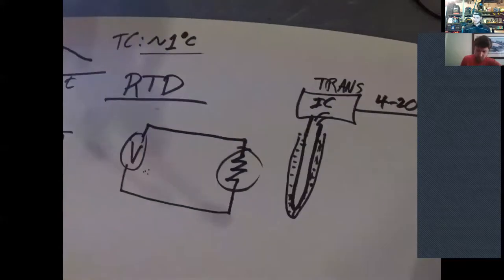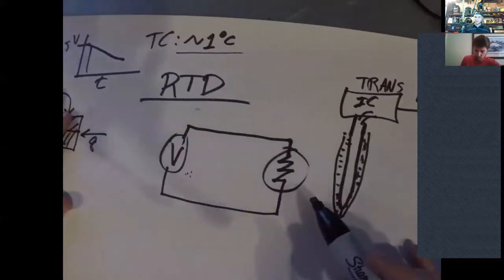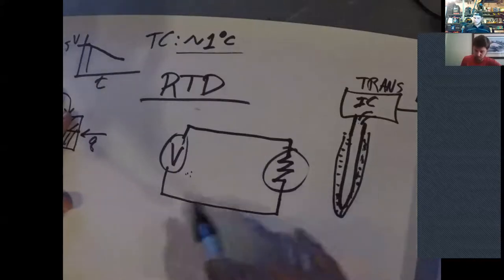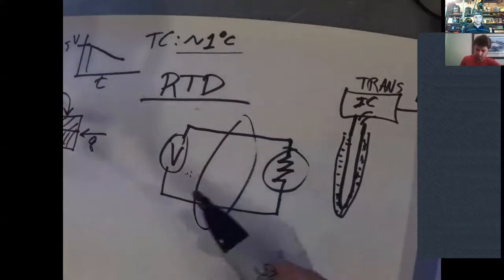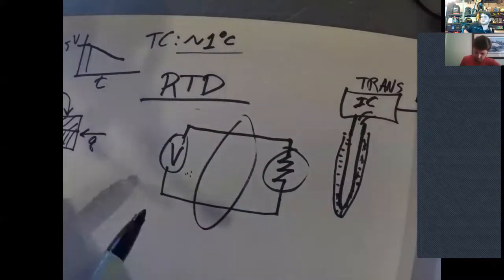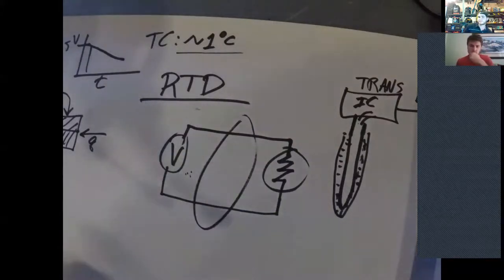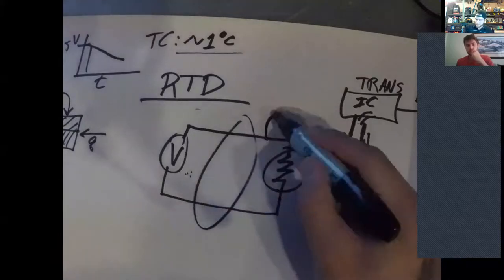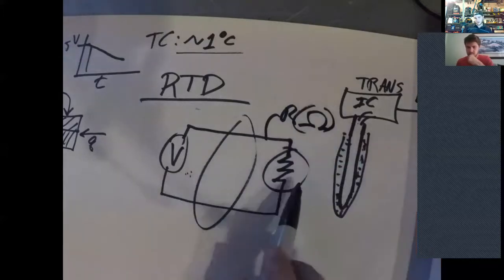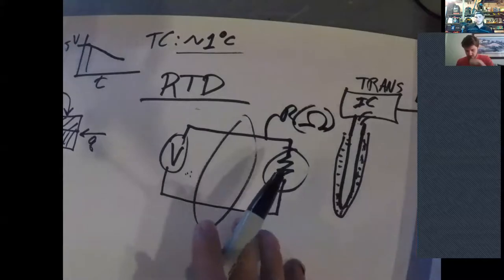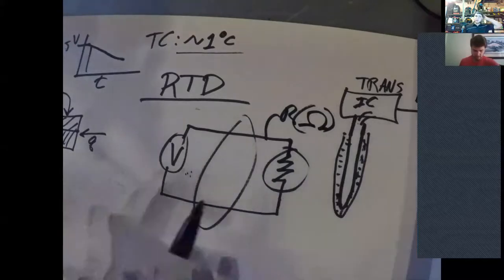So then usually the RTD has an integrated circuit board that has basically a signal transducer. So it reads that voltage, changes that into a 4 to 20 milliamp signal. That analog signal goes back to your controller. So this is more common in permanent installs and processes, you'll more than likely see RTDs and not thermocouples for measuring temperature, just because it gives you a much higher degree of accuracy.